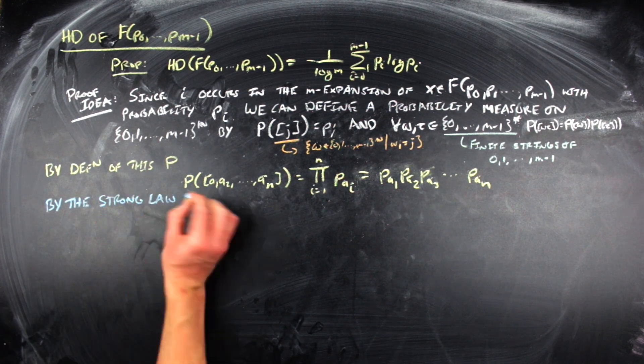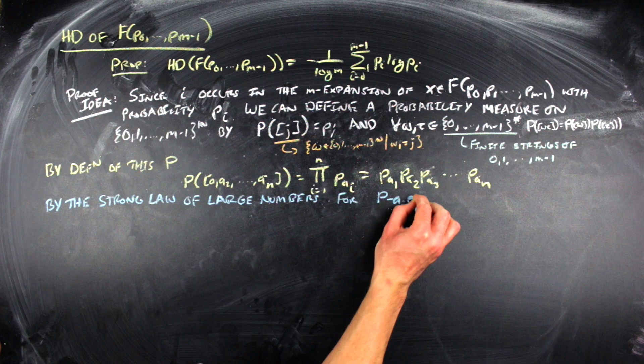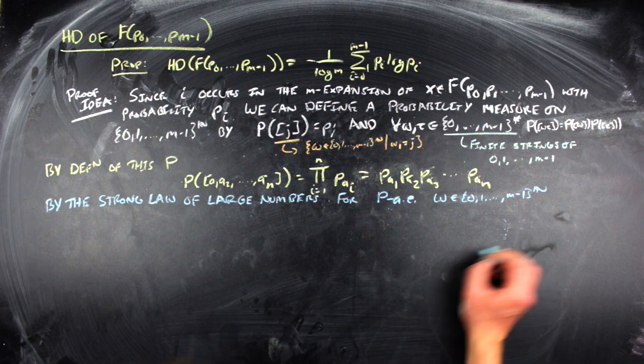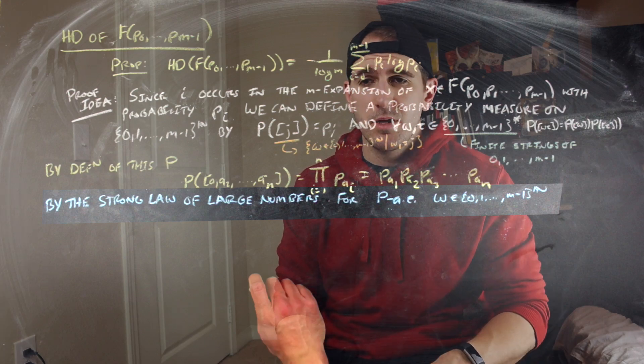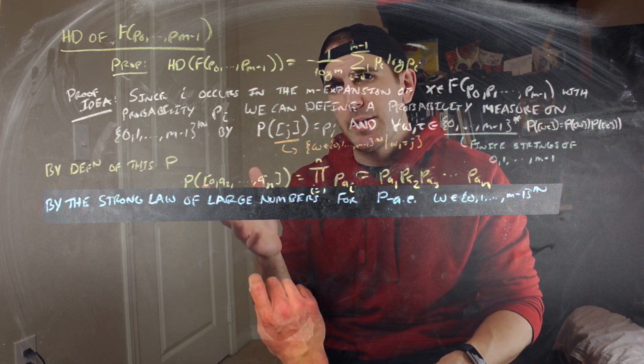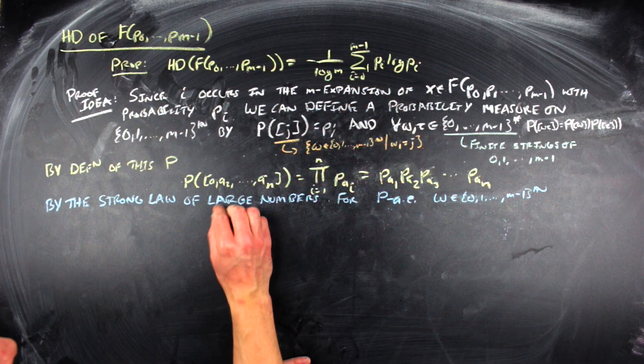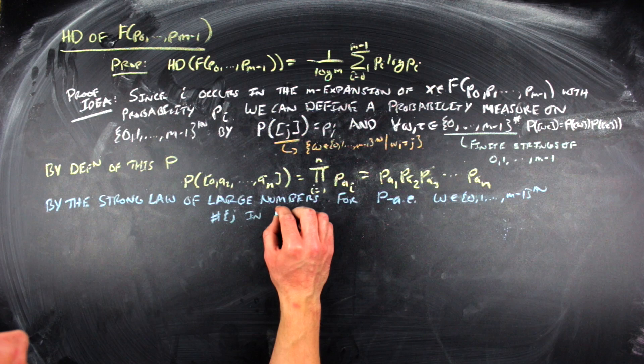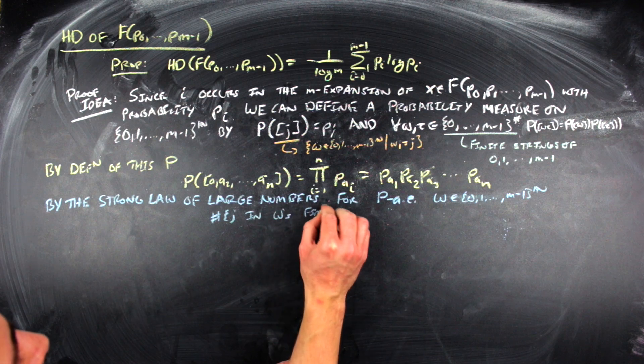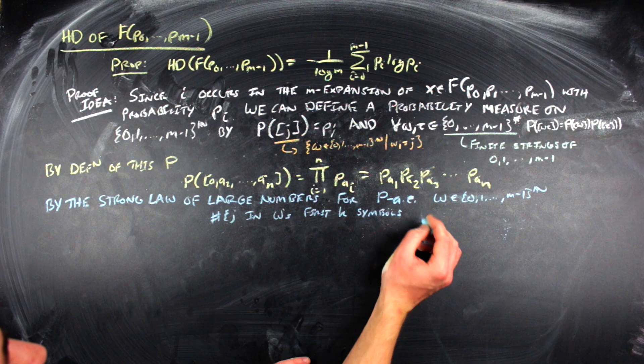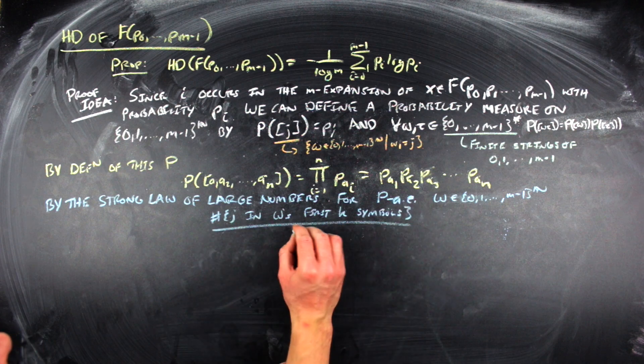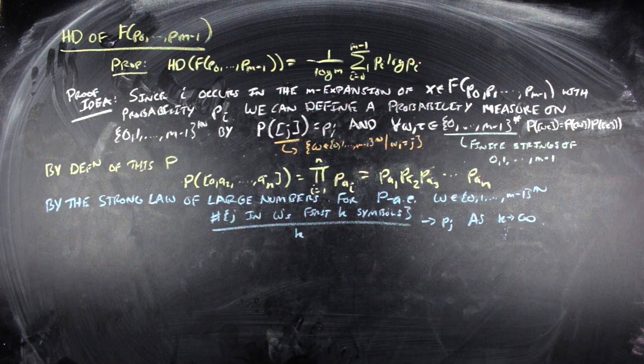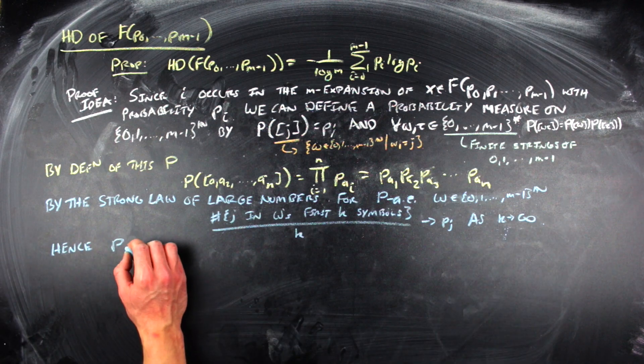Now, from probability theory, there's this thing called the strong law of large numbers, which applies here, and that will say that for P almost every, so this fails on a set of P measure 0, so on the stuff that I care about with respect to P, the following thing will occur. For P almost every X within 0, 1, the count of j's in the first K digits divided by K will approach P sub J as K goes to infinity. And this will happen for every J from 0 to M minus 1.